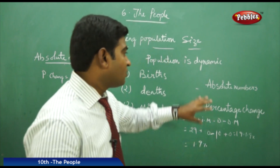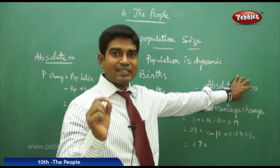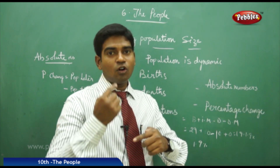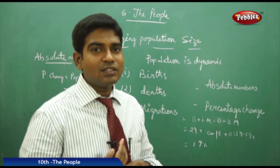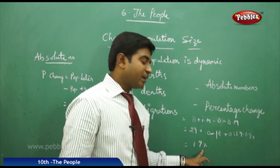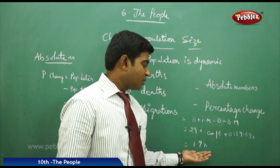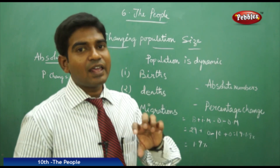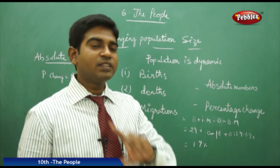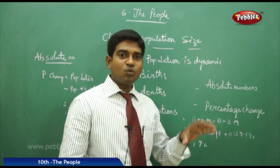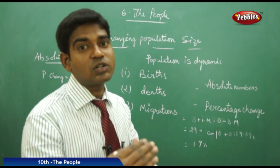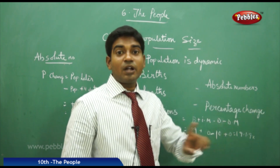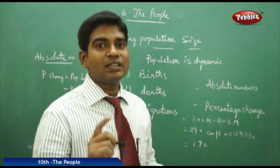So we have two criteria for assessing population dynamics. The first is absolute numbers, to get the exact figures of magnitude. The second is percentage change, to understand how the rate is changing over a given period — whether one year, six months, or a census decade. Population is not static; it is dynamic.